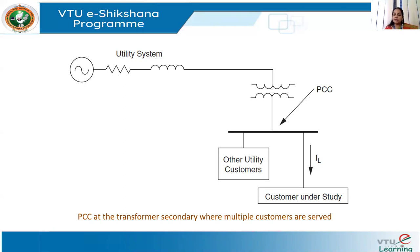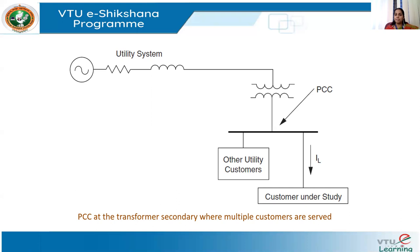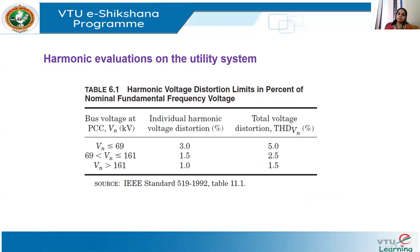The concept of PCC is now clear — where to locate the PCC and that PCC is the point where evaluations are done. When talking about harmonic evaluation, we can do it either on the utility side or on the end user side. The harmonic evaluations on the utility system involve procedures to determine the acceptability of voltage distortion for all customers. There is a table giving the THD value for different voltage levels.